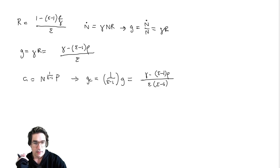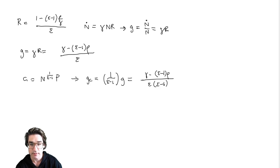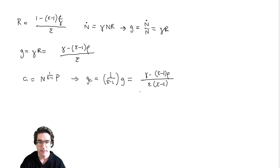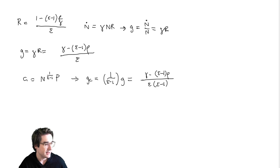Then you can get all sorts of stuff. You could back out the interest rate using the Euler equation: R equals rho plus GC. So you just add in rho here to get to R. You can find P, one minus R — so you can find pretty much whatever you want at that point.